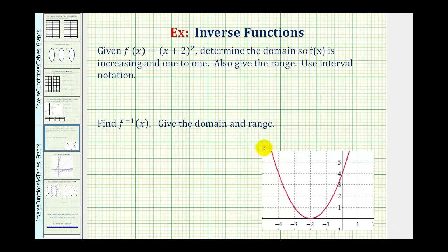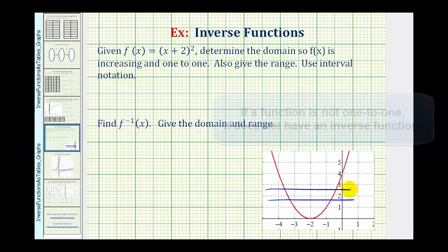So here's a graph of our function f of x. Notice if we don't restrict the domain, this function is not one to one because horizontal lines would intersect this graph in more than one point.